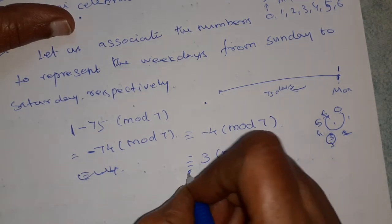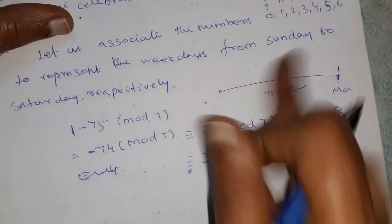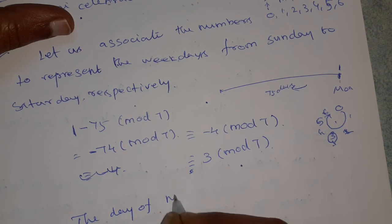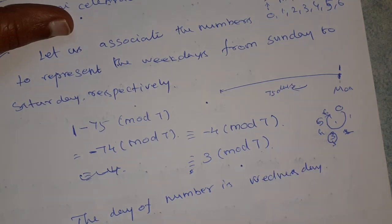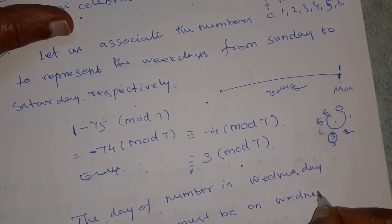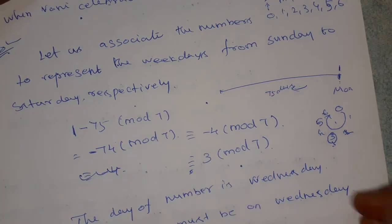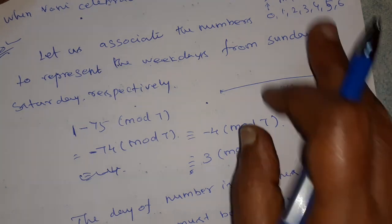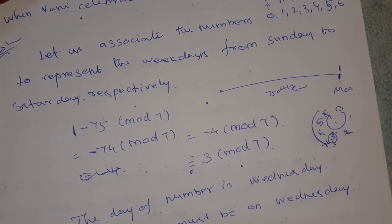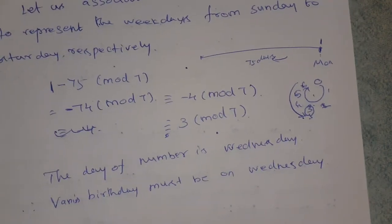The day number is 3, which corresponds to Wednesday. Therefore, Vani's birthday was on Wednesday. Plus direction is clockwise and minus direction is anti-clockwise. Thank you for watching.